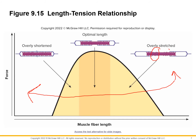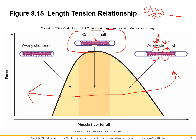In an overly stretched sarcomere, some myosin heads have nothing to bind to. Think of a tug-of-war: if some people on the rope can't grab hold, they can't contribute. It's only when the rope is pulled back enough that they can join in and increase the strength. The optimal length is when there's a nice overlap — no wasted myosin heads, but still plenty of room for actin to be pulled together. Once too shortened, the actin can't go anywhere and strength drops rapidly.